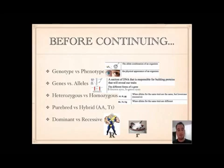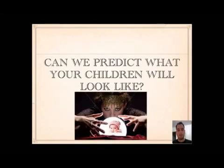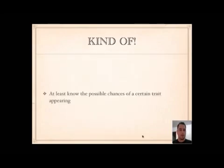Dominant means the allele that overpowers — it stands out and hides the recessive. Like the little cat in the jar, the recessive one is being hidden; it's actually there but not appearing. Can we predict what your children will look like in the future? Kind of — at least we know the possible chances of a certain trait appearing.